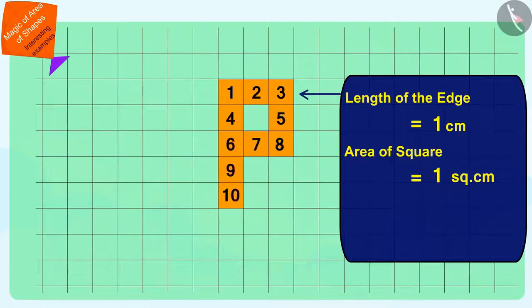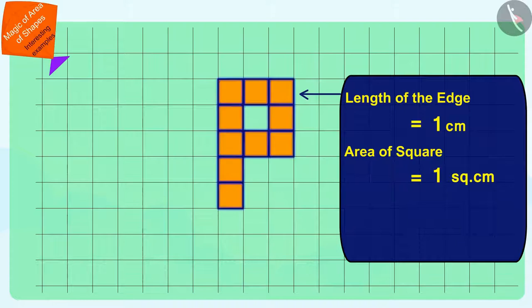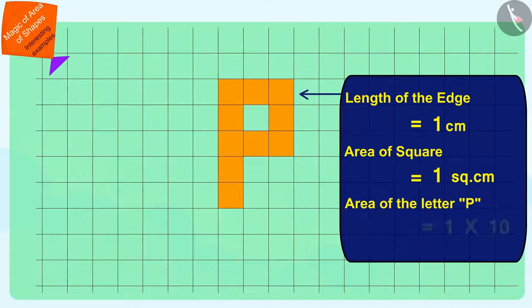Pinky has used 10 sub-stickers in her name letter P. Therefore, the area of the letter P in her name will be 1 times 10, 10 square centimeters.